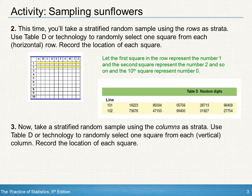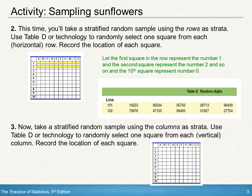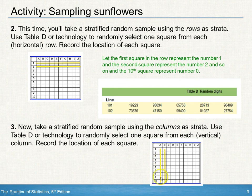Method 3 asks for a stratified random sample using the columns as the strata. As you can see, you're now going to need one square from each column. Again, you would use a random number table or random number generator from 1 to 10, looking for one square within each column.